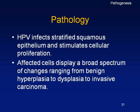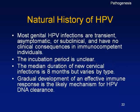The natural history of HPV: infections are transient, asymptomatic, could be subclinical, and may not have any clinical consequence in a normal person — you may have it without noticing. The incubation period is unclear because we cannot determine when a person was infected versus when disease appeared. The median duration for a new cervical infection is about 8 months, but varies.